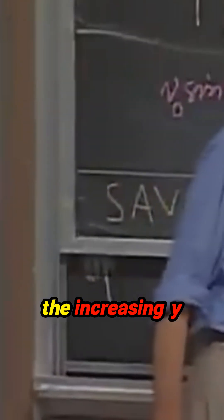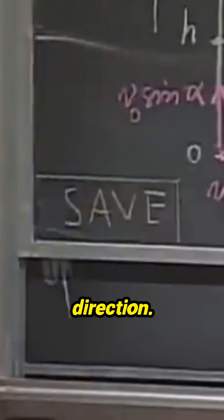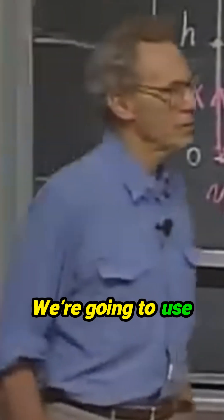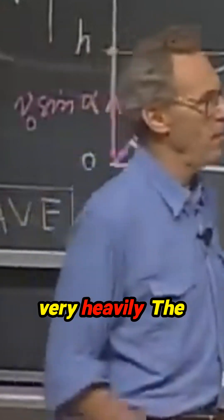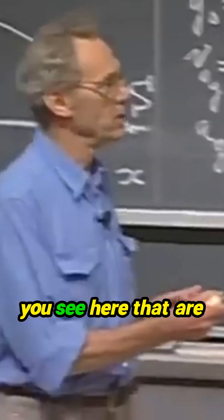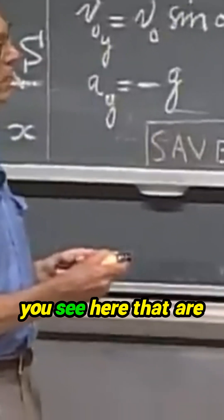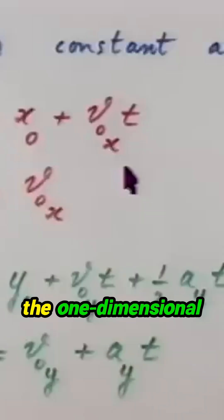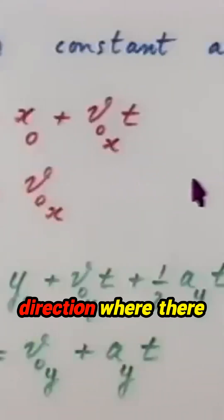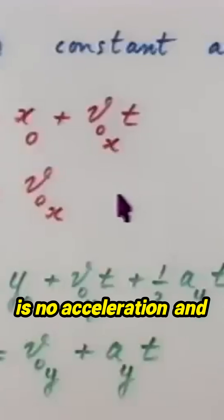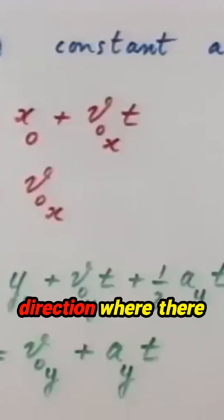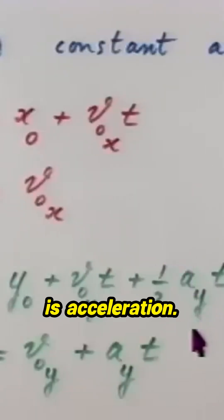This is the increasing y-direction and this is the increasing x-direction. We're going to use very heavily the equations that you see here, which are so familiar to us — the one-dimensional equations in the x-direction where there is no acceleration, and the one-dimensional equations in the y-direction where there is acceleration.